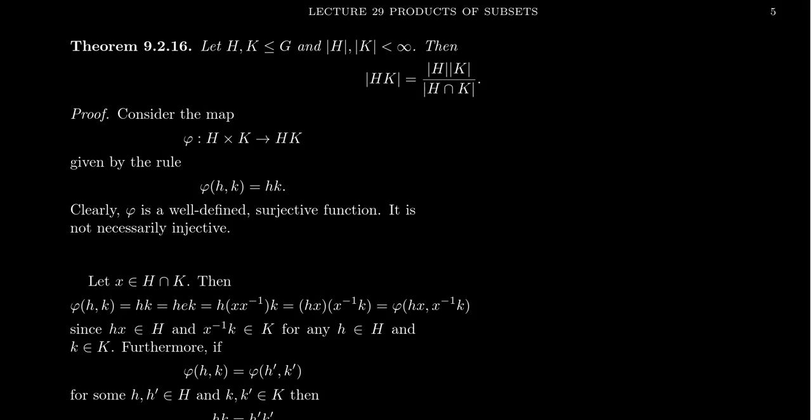In this video, we're going to prove the following theorem. Let H and K both be subgroups of some group G, and suppose that the orders of the subgroups H and K are both finite. It does not actually have to be true that G is itself a finite group, but H and K are going to have to be finite groups in this situation.